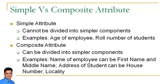While composite attributes are those attributes which can be divided into simpler components. For example, name can be broken into first name, middle name, or last name. Address can be broken into house number and locality. So jo column further sub-parts mein break ho sakta hai, us column ko composite attribute bola jaega.